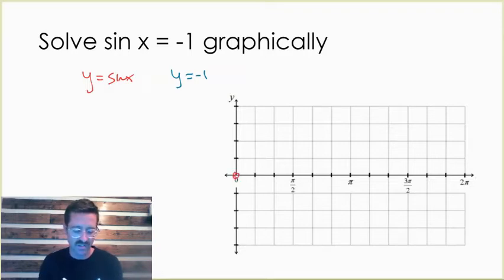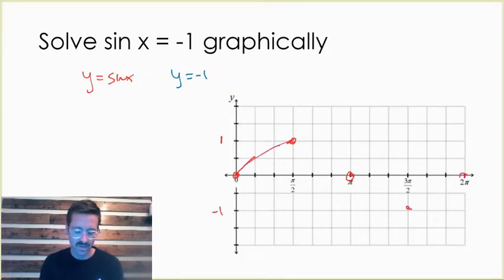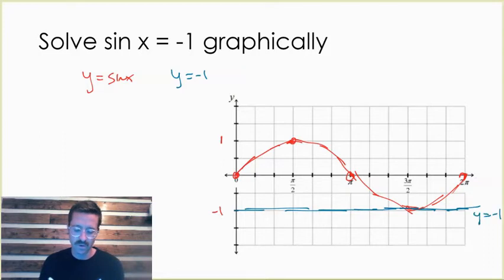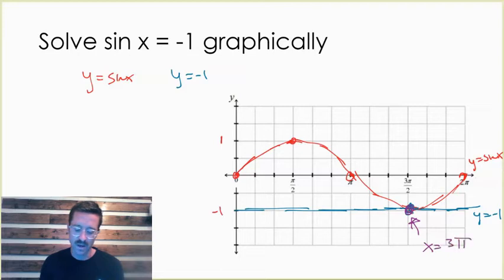If I graph y equals sine x, sine starts at zero, rises up to a maximum of one, comes back to zero, goes down to a minimum of negative one, then returns to zero. If we graph y equals negative one, that's a horizontal line through negative one. The point where they intersect is the solution, and that's going to be at x equals three pi over two.